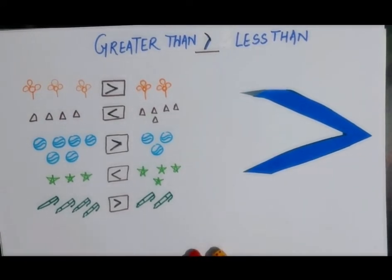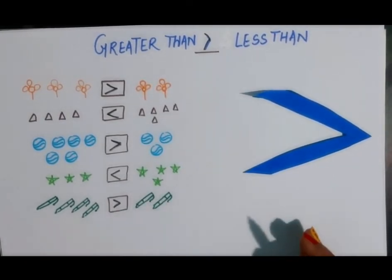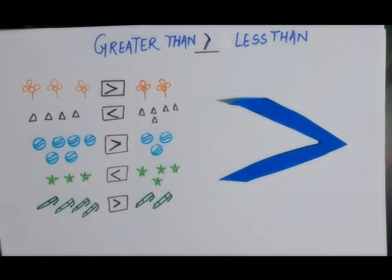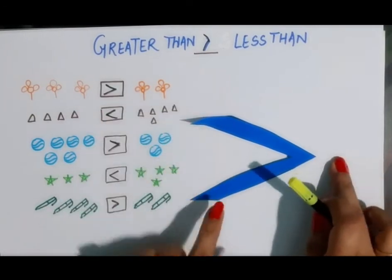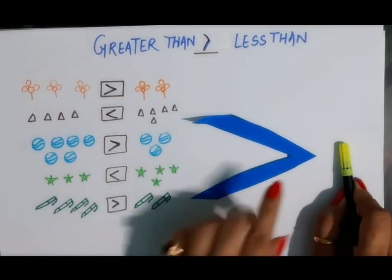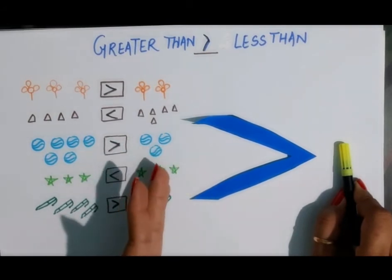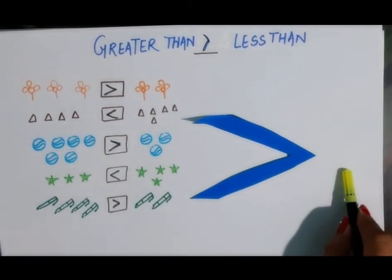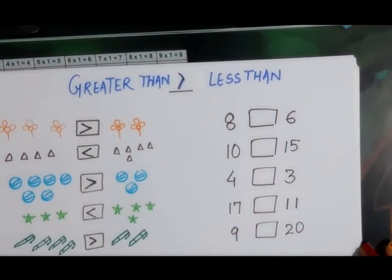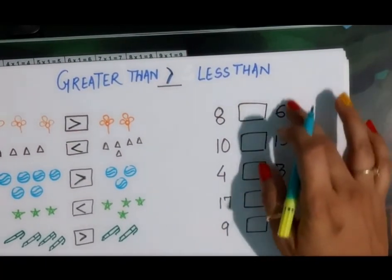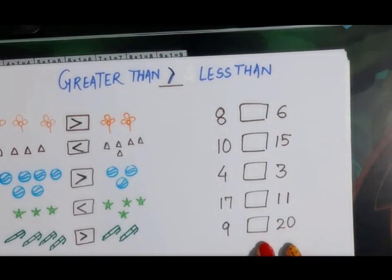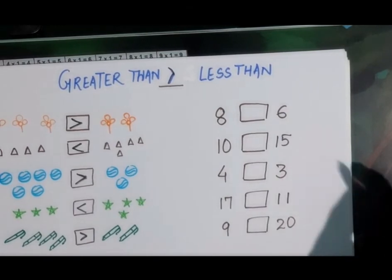This is how we compare two different numbers using the greater than and smaller than sign. The open side is greater and the closed one is smaller. Let's see a few more examples — here are a few numbers with boxes, and we have to put the correct sign.